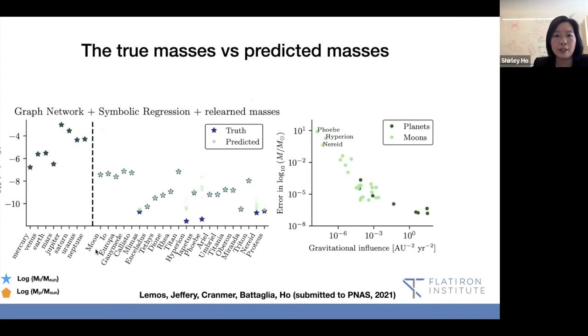And then we also showed the masses of different planets and moons. These are all the planets and all the moons. The truth is a star. The projected is the circle here. And you can see that they're basically on top of each other, except for the very light moons or a very light planet of the system. What do I mean by that is that the gravitational influence, if it's very small gravitational influence, you should expect there's a larger error to it. As long as that moon has a very little influence on the whole system, of course, you don't see any perturbative effect on the whole system, and you have a larger error, which is what we expect, which we'll show here.